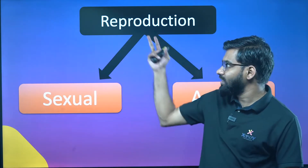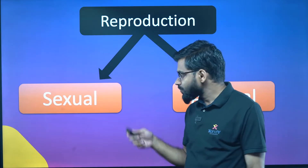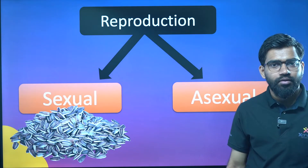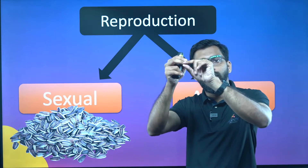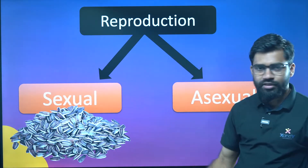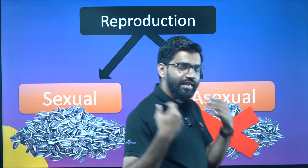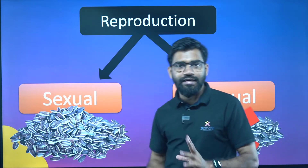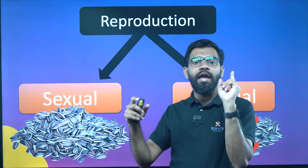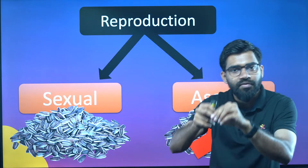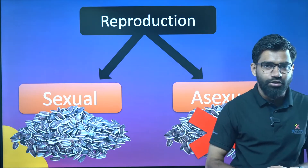We call it simple. Plans with sexual reproduction involve a seed. With a seed it is sexual reproduction, because both parents contribute to a seed. No seed means asexual reproduction. In sexual reproduction, a male plant and a female plant's gametes fuse and there is a seed.